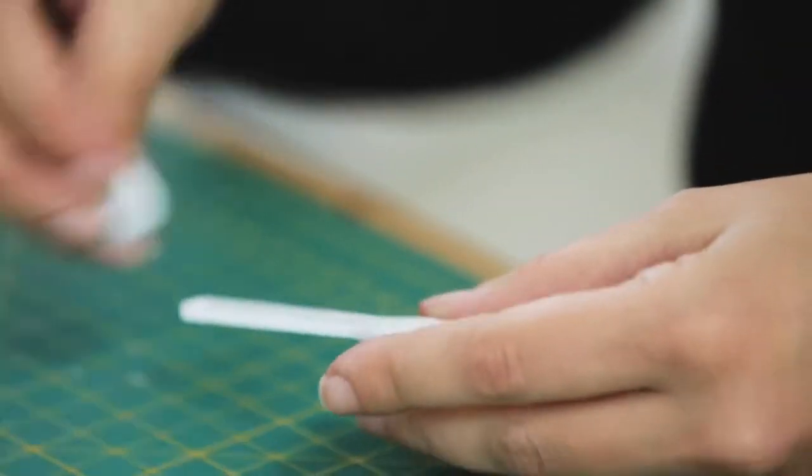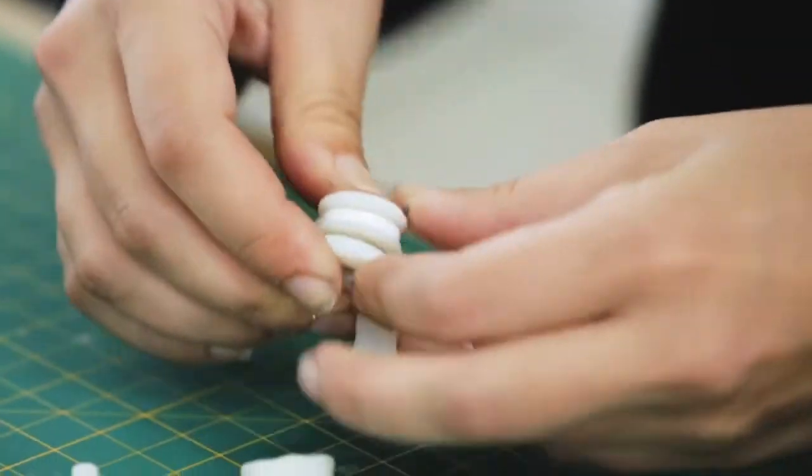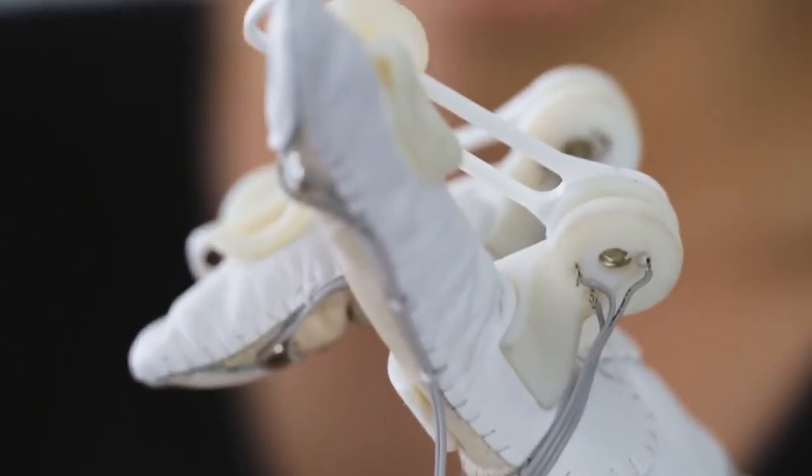In addition, there are actuators designed for your knuckles. These use potentiometers. You can rotate these pots by bending your fingers.